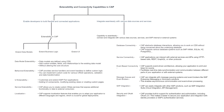Extensibility and connectivity capabilities in CAP enable developers to build flexible and connected applications. There are two aspects: extensibility and connectivity. Extensibility makes your application more flexible — you can extend it at the data modeling level, the business logic level, or the UI application level. Connectivity helps you integrate seamlessly with various data sources and services.